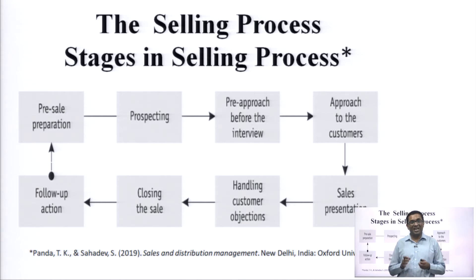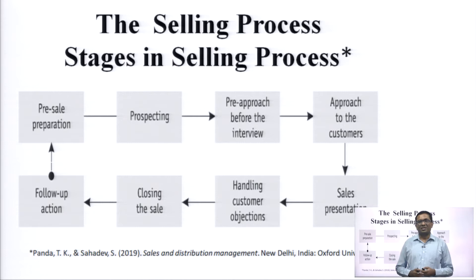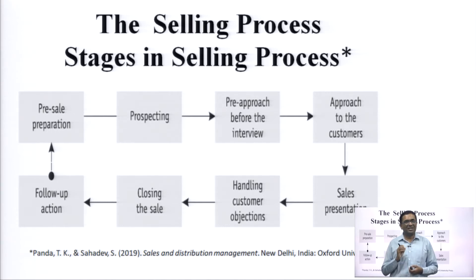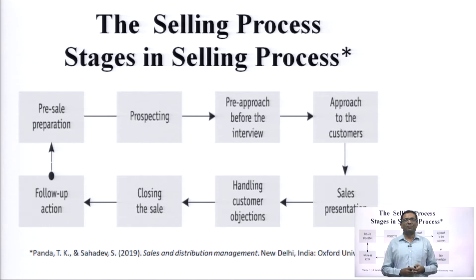Next, in that meeting itself, there is customer handling or handling customer objections. The word objection here is not a negative word — it is giving the right information to the customer which the customer requires to buy your product or service. Then comes closing the sale, getting the final order after handling customer objections, and lastly you have follow-up actions. So let us look at these stages one by one.